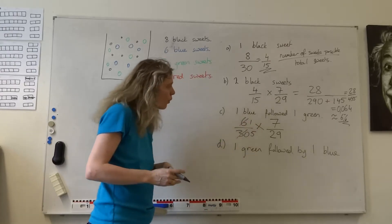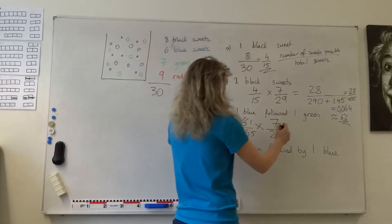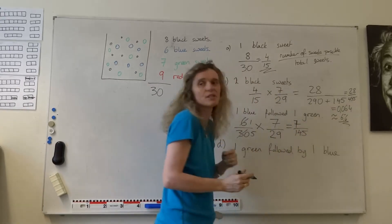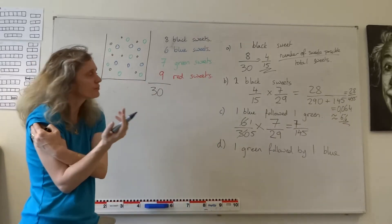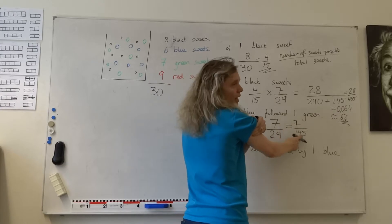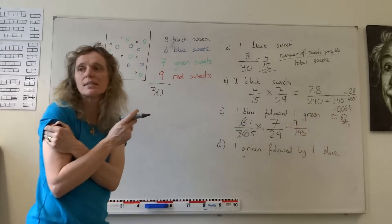So we could simplify that. 6 thirtieths is quite nice because that simplifies to one-fifth. So we get seven one hundred and forty-fifths chance of us getting that. Which is 1 times 7, 7, 5 times 29, 145.